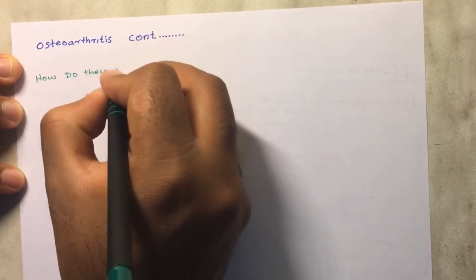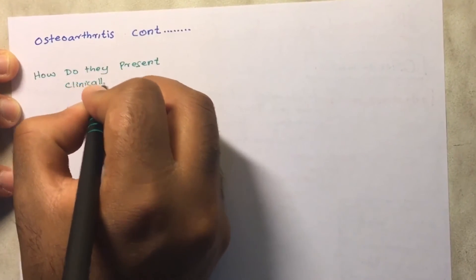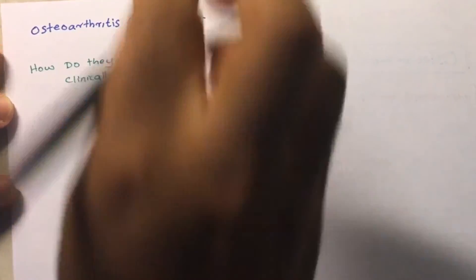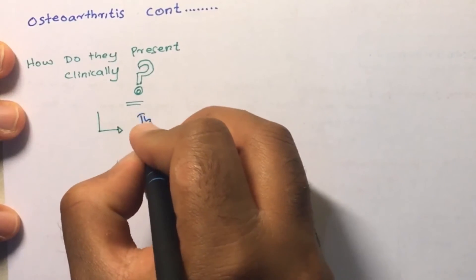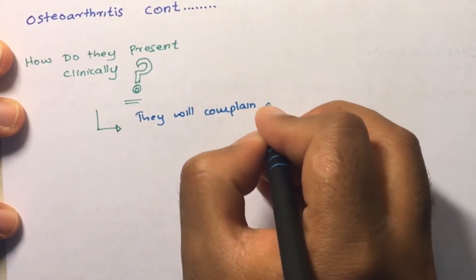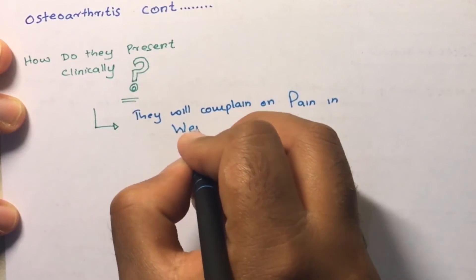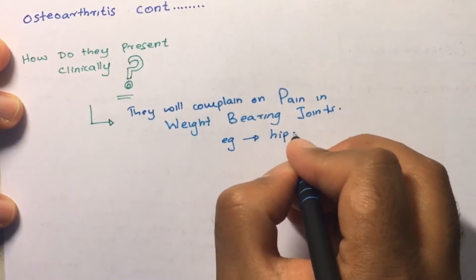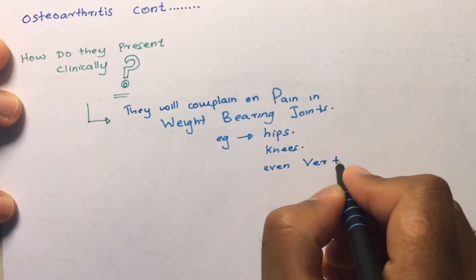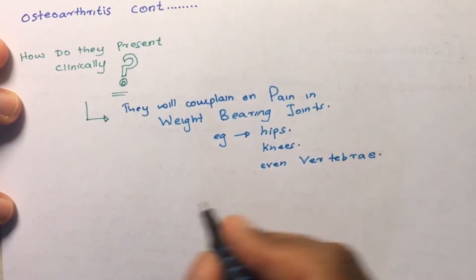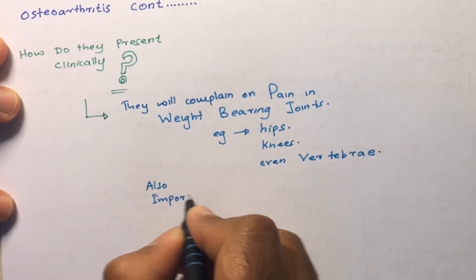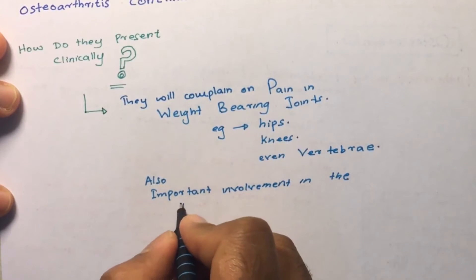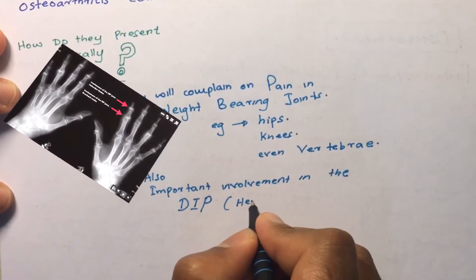Clinically, these patients are typically old, often football players or those with a history of chronic mechanical stress on a particular joint. They complain of pain mostly in weight-bearing joints like the hip, knee, and even the vertebrae, with a history of progressive increase in pain over a couple of months. There is also important involvement of the distal and proximal interphalangeal joints.